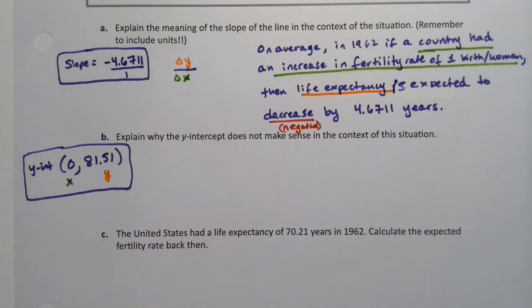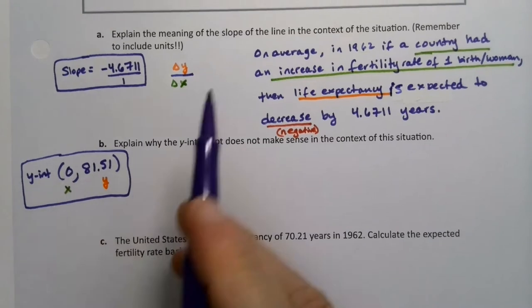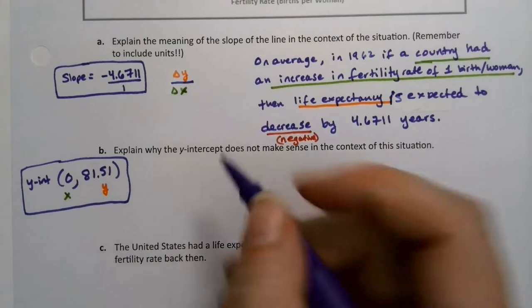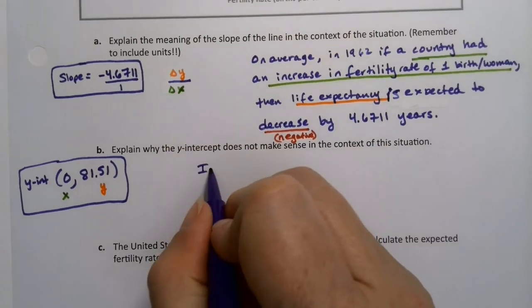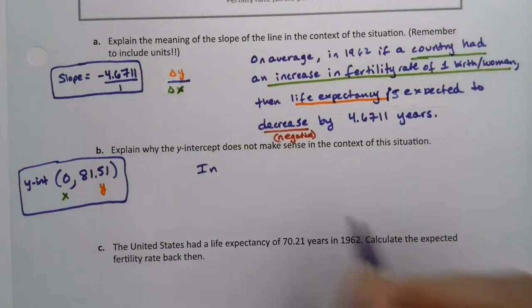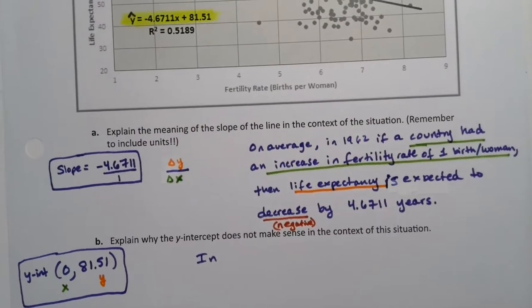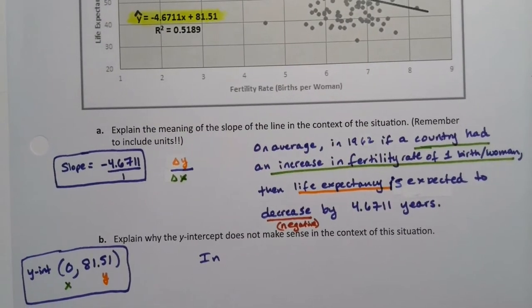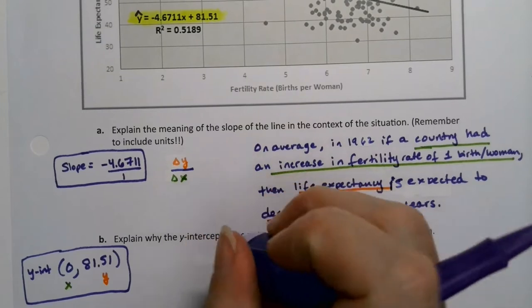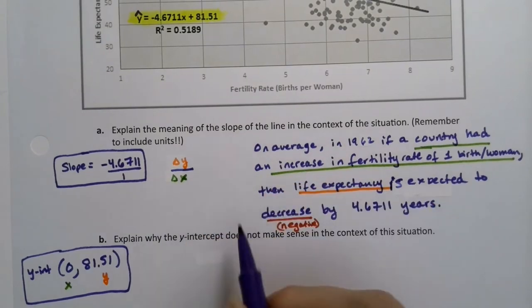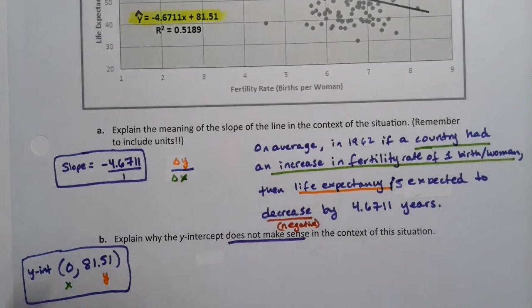So you'll say, in 1962, if a country had zero fertility rate. Well, I guess that's why it doesn't make sense. How exactly do you have a country that has zero fertility rate? Think about what that would mean.